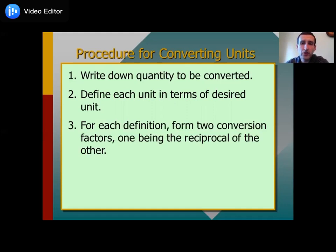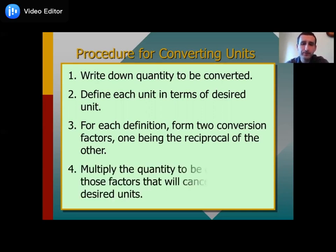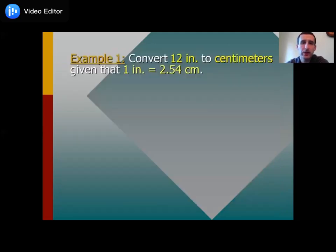Create the conversion factor — this is where people often have trouble. If going from inches to feet, do you multiply or divide by 12? To avoid guessing, create both conversion factors: 12 over 1 and 1 over 12. Then multiply by the one that will appropriately cancel out the units. Now we'll do an example: converting 12 inches to centimeters.